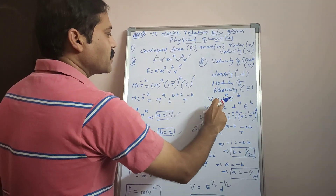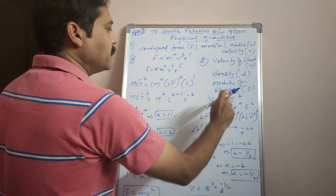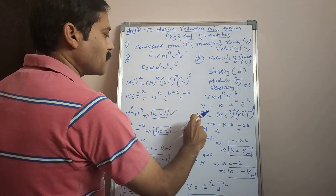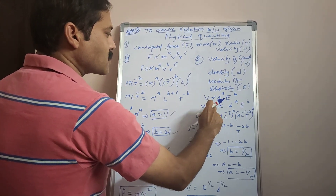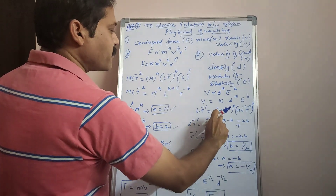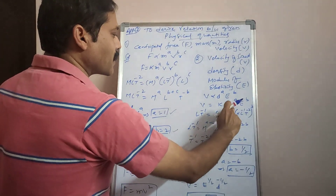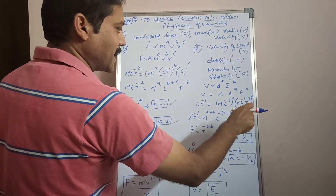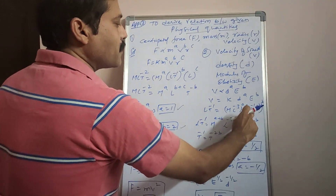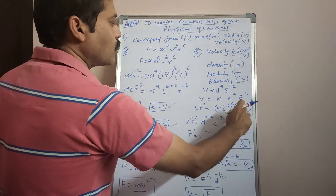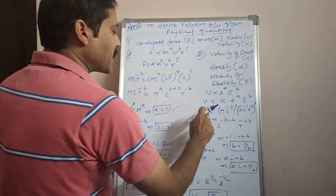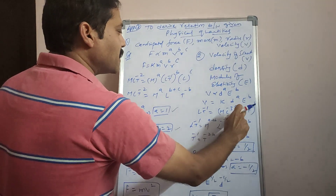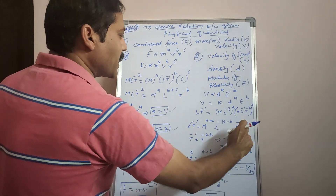Take V proportional to D power A, E power B. So V = K × D power A × E power B. The dimensional formula LT⁻¹ equals (ML⁻³) to the power A multiplied by (ML⁻¹T⁻²) to the power B, since modulus of elasticity is stress — dimensional formula M L⁻¹ T⁻². Expanding: LT⁻¹ = M power (A+B), L power (−3A − B), T power (−2B).